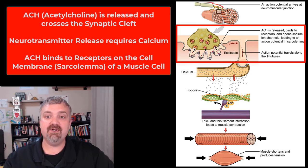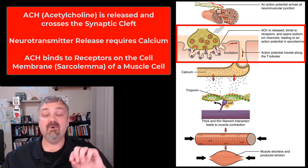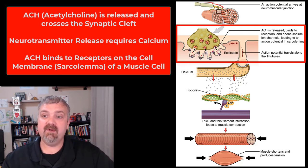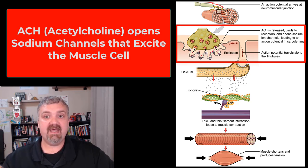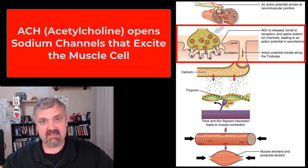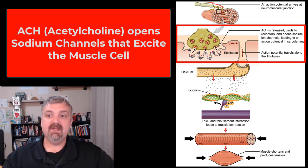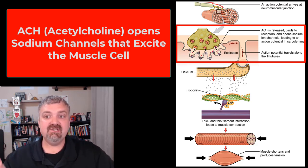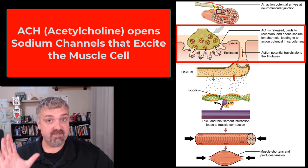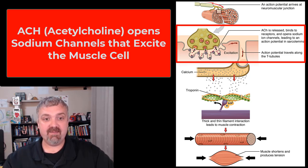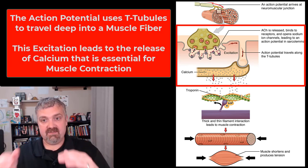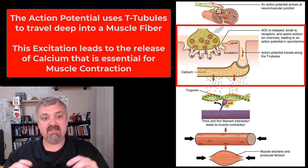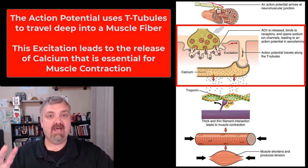Acetylcholine is released from the axon of the motor nerve. It's going to bind to receptors on the sarcolemma — the plasma membrane of a muscle fiber. Once it binds to those receptors, it opens sodium ion channels. As we know from the nervous system, sodium depolarizes and turns signals on. So calcium is needed to release acetylcholine, and acetylcholine opens sodium channels leading to an action potential in the sarcolemma. This action potential then travels down through the muscle fibers.